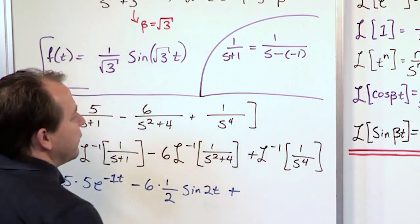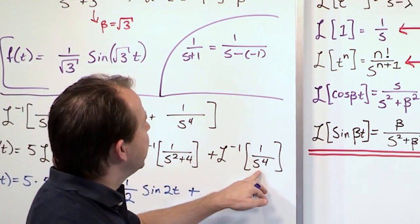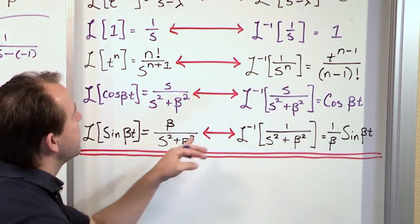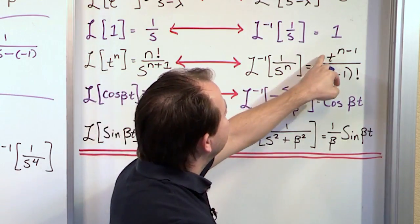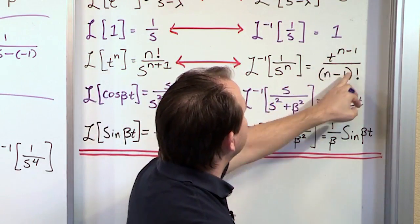And then the final thing we do, we have a plus sign. We're taking the inverse Laplace of this guy. 1 over s to the fourth power. So here n is 4. So it's t to the 4 minus 1.